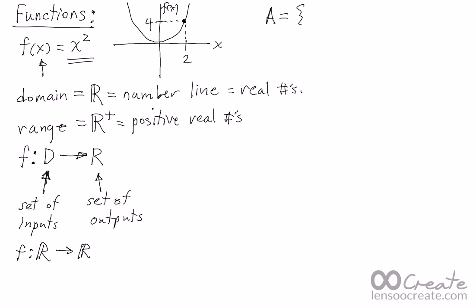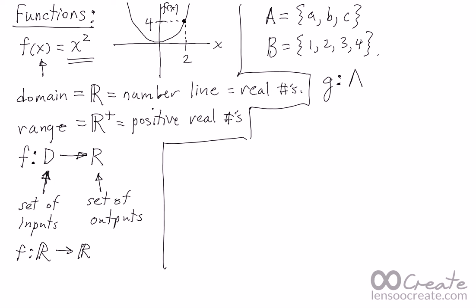For example, if A is the set a, b, c, and B is the set 1, 2, 3, 4, then I can define a function, let's call it G, that maps the set A to the set B, and we say that G maps the set A to the set B.